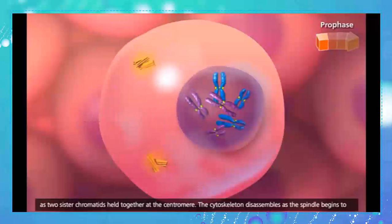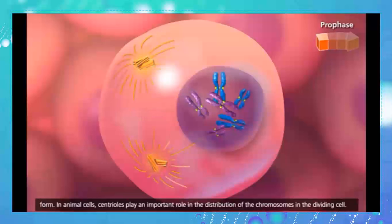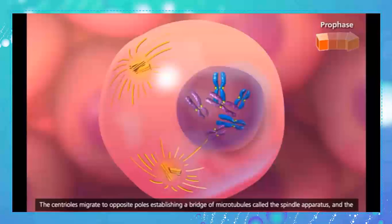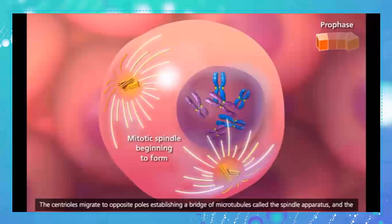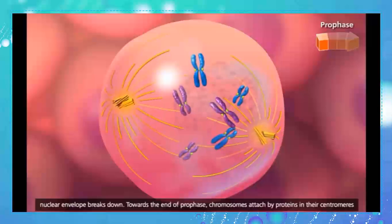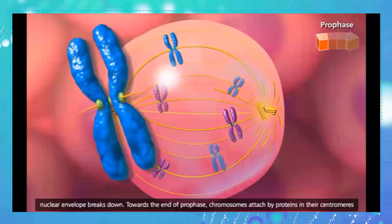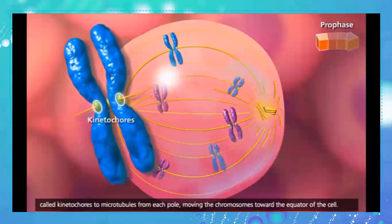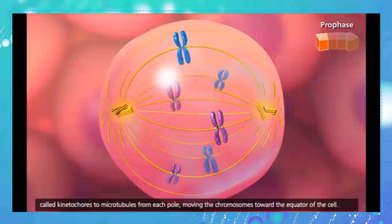The cytoskeleton disassembles as the spindle begins to form. In animal cells, centrioles play an important role in the distribution of chromosomes in the dividing cell. The centrioles migrate to opposite poles, establishing a bridge of microtubules called the spindle apparatus, and the nuclear envelope breaks down. Towards the end of prophase, chromosomes attach by proteins in their centromeres called kinetochores to microtubules from each pole, moving the chromosomes toward the equator of the cell.